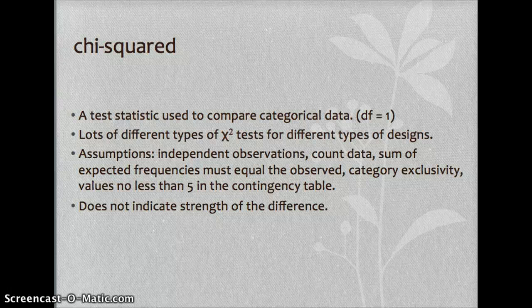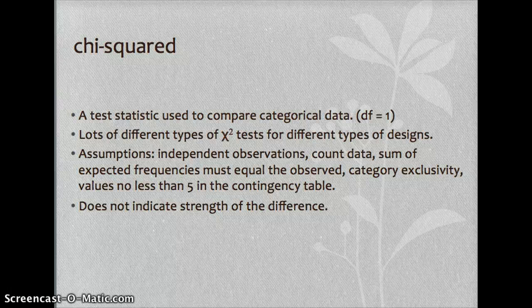Chi-squared is a test statistic used to compare categorical data, with degrees of freedom of one. There are many different types of chi-squared tests for different designs. It does not indicate the strength of the difference — a chi-squared does not indicate the strength or the direction of any relationship. It only tells you that there is a difference or not. You have to do a phi coefficient after that to tell you the strength or magnitude of the difference.